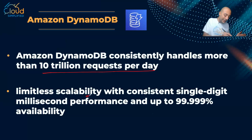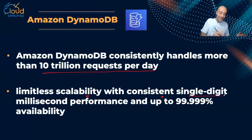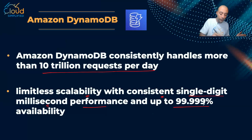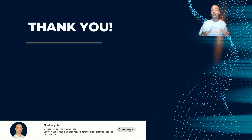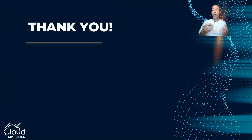DynamoDB offers limitless scalability with consistent single-digit millisecond performance, and up to 99.999% availability. With this, we come to the end of this very interesting second type of databases — the non-relational database. We explained the option that AWS is offering, which is DynamoDB. I hope this is clear. Please put any questions in the comments, and thank you so much for watching. See you next week.